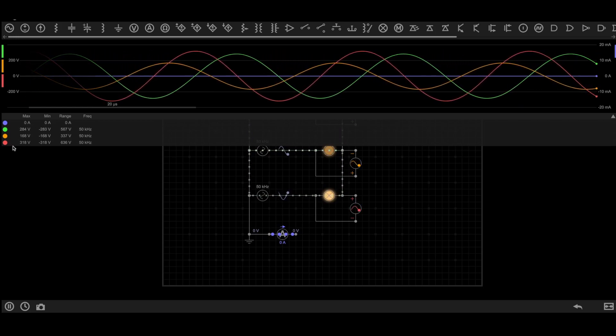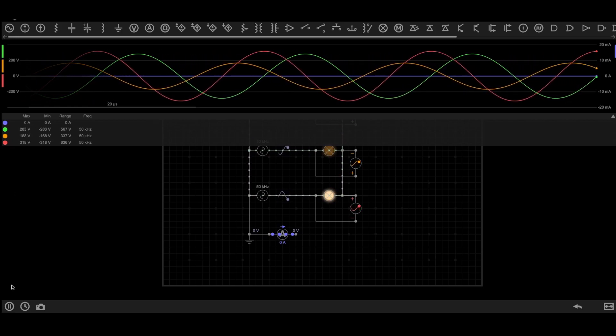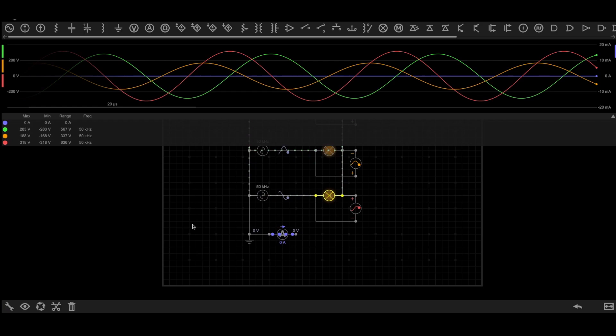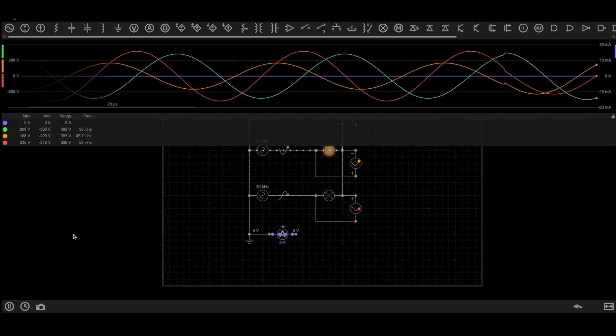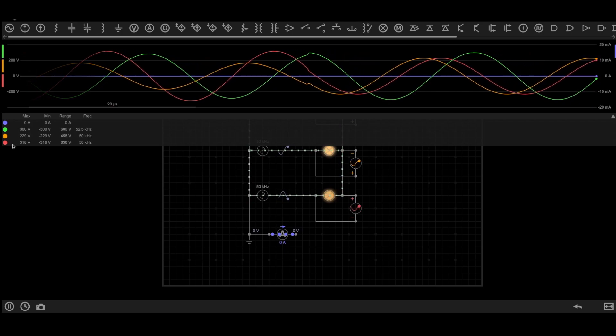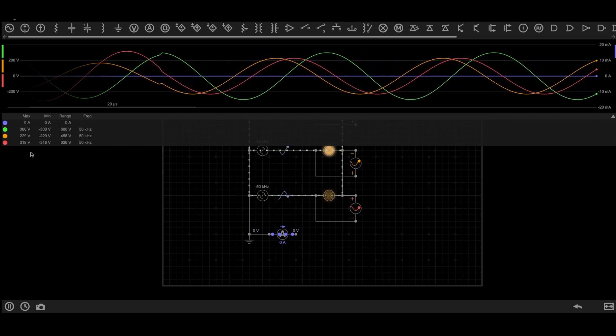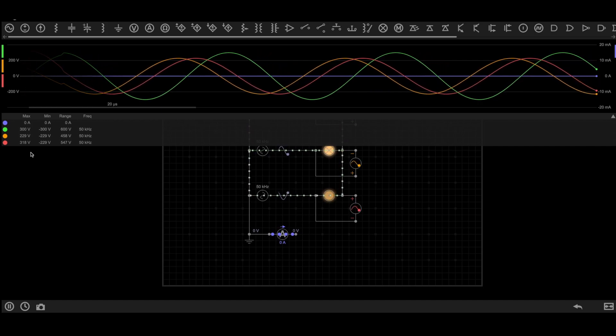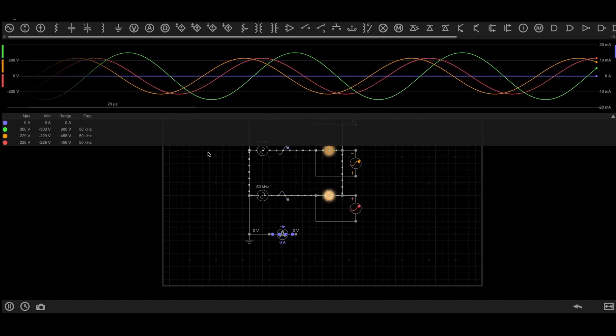Now if the load changes, let me make LED three 10 watts. As you can see again, the voltage across the load has changed. This will keep changing or keep floating with the change in the load. This situation is what we call floating neutral.